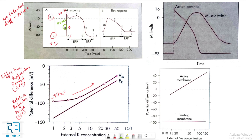The upstroke is followed immediately by a brief period of partial early repolarization, which is phase 1. This is followed by a plateau phase, phase 2, that persists for about 0.1 to 0.2 seconds.